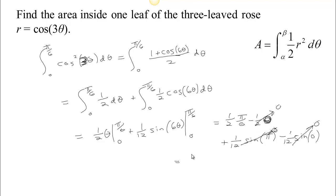The answer is pi twelfths. The area of one leaf of that three-leaf rose is pi/12.